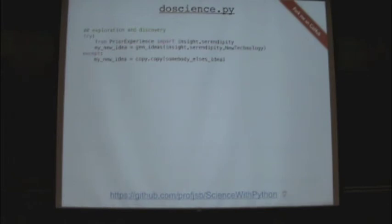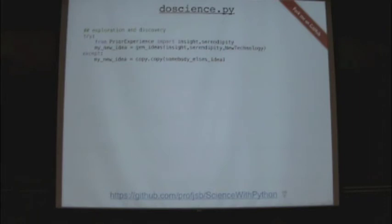We'll go through this, and now this should make some sense to you. We have to do exploration and discovery. So in a try-except statement, I have to gain this insight and serendipity from my prior experience, and then using that I generate some great idea. If I can't find my own, then I just steal somebody else's — and you see I use copy.copy appropriately. Maybe it's copy.deepcopy.